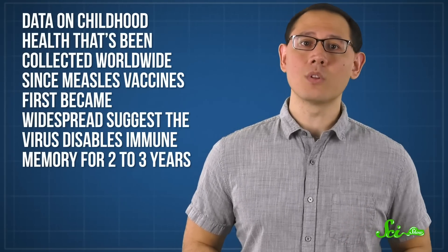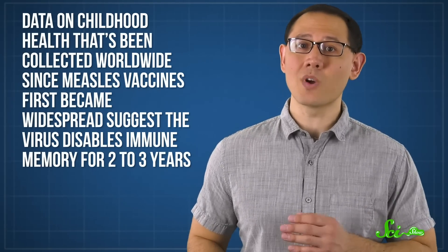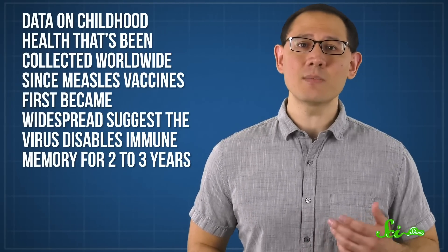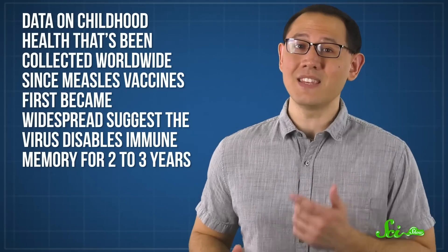But a growing body of research suggests it lasts way longer than that. Data on childhood health that's been collected worldwide since measles vaccines first became widespread suggests the virus disables immune memory for two to three years.